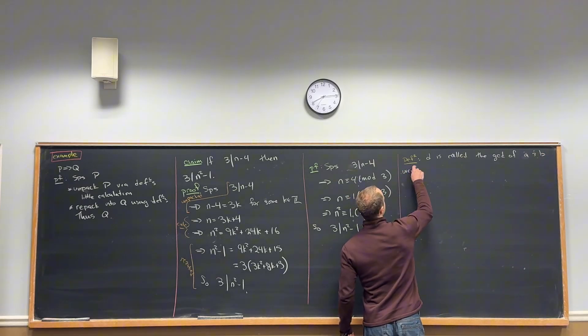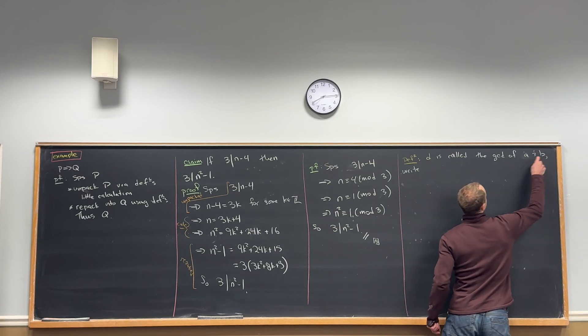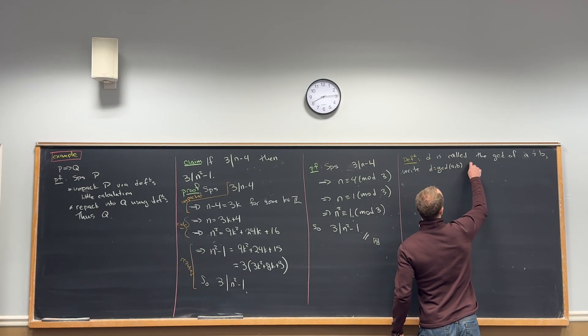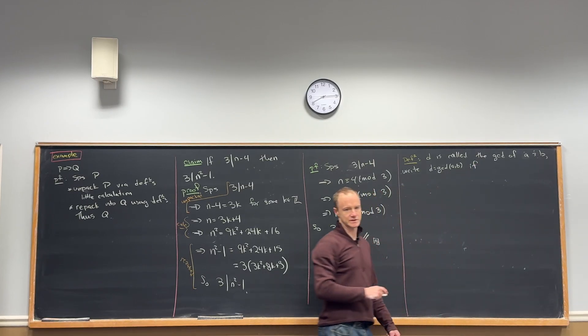And we would write D equals GCD of A, B, if... So, what's the rule?